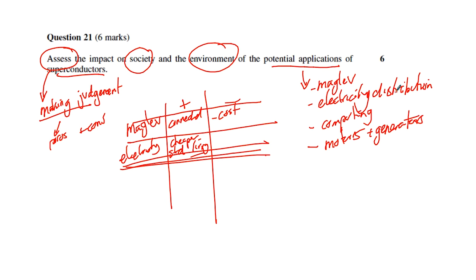A positive aspect of the environment is there's no energy loss, therefore we don't have to burn so much coal. Clearly you can see I'm looking at a number of positives and negatives on both society and environment using a number of potential applications of superconductors.